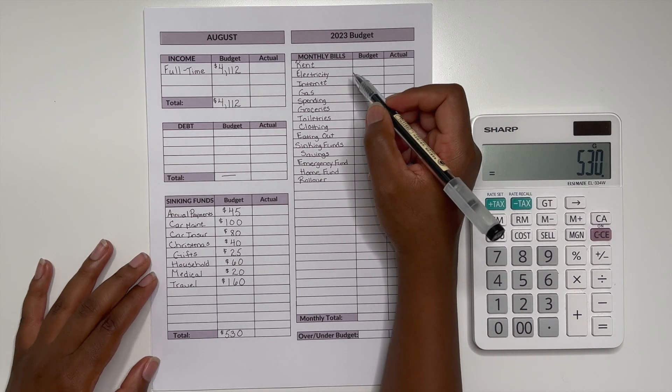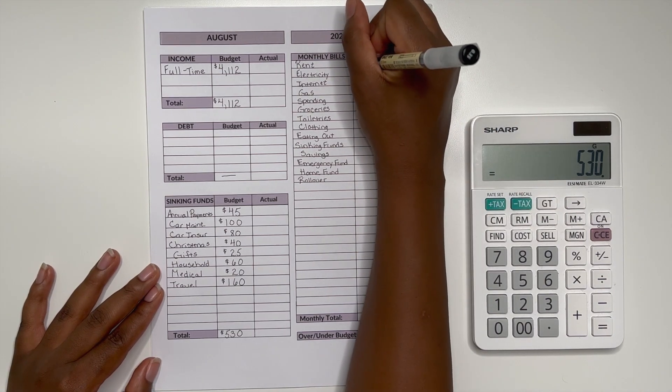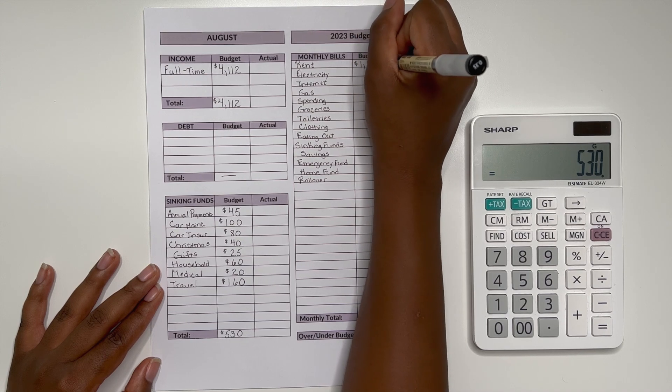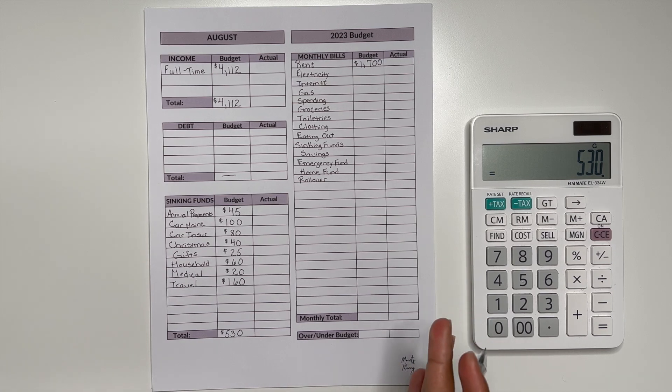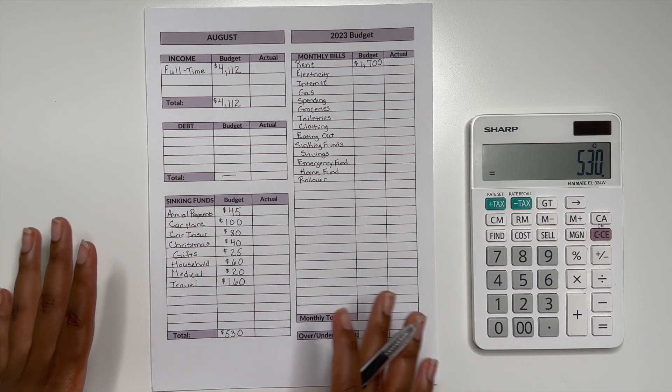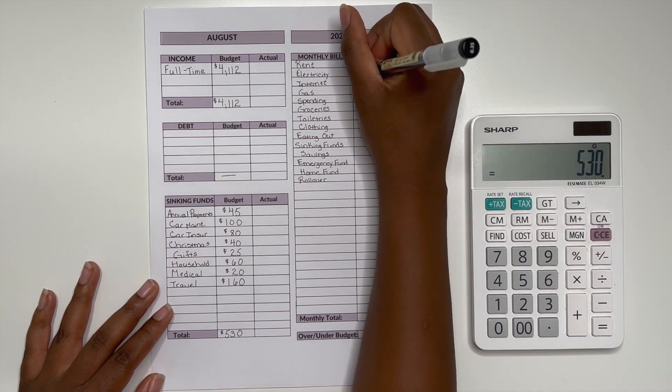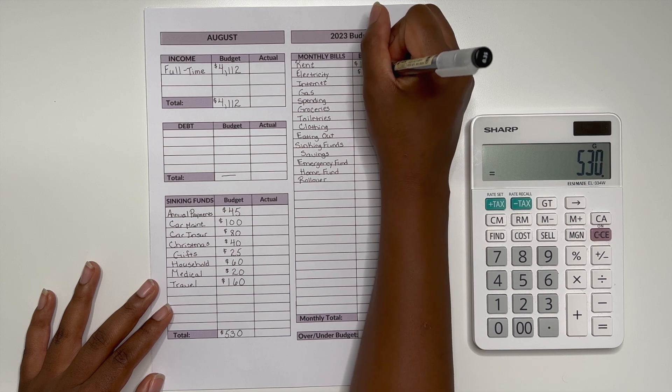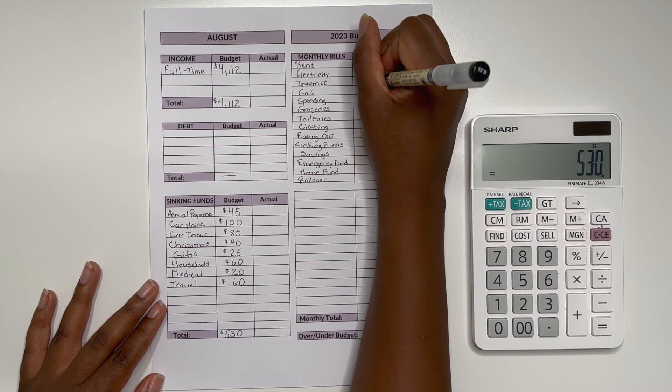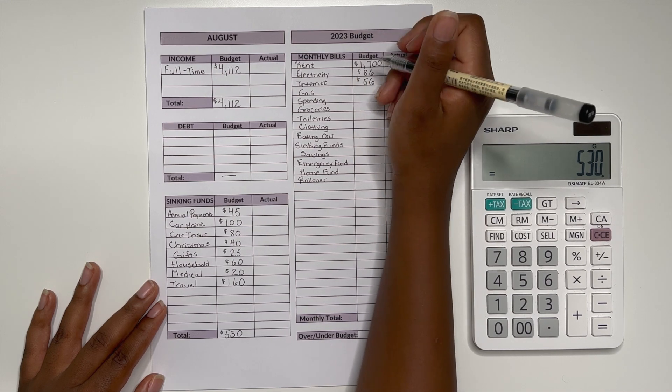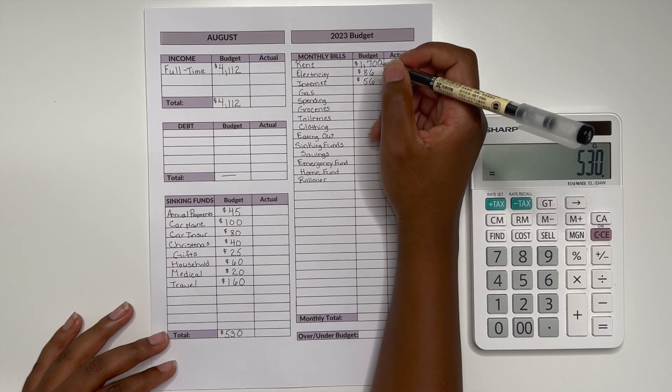Alright so looking at my monthly bills the first one that I have is rent and rent I'm going to budget at $1,700. It's normally a little bit under maybe $1,680, $1,675 but I like to round it up to $1,700 just in case. Electricity I did receive the bill for this for the month so that's going to be $86. Internet is also one that I already know how much that's going to be. That will be $56.